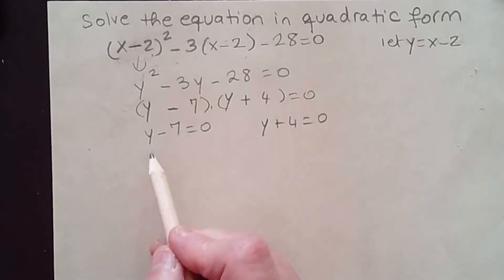So now we get y = 7. Remember you add 7 on both sides. And then here you get y = -4. So we solved.